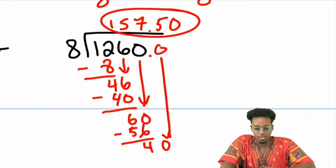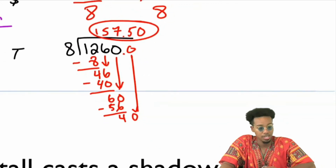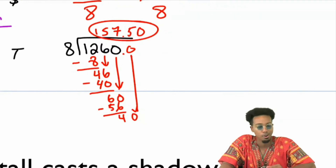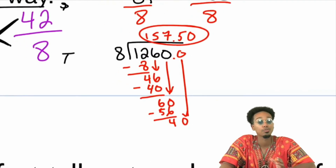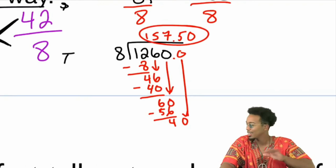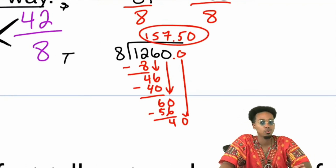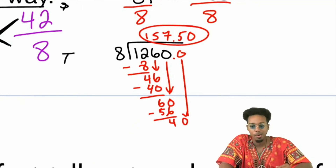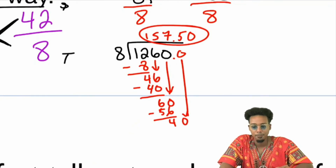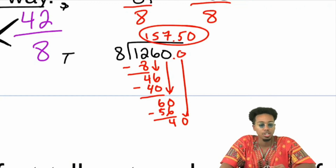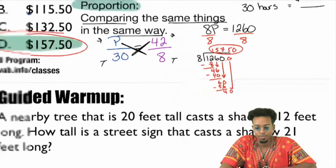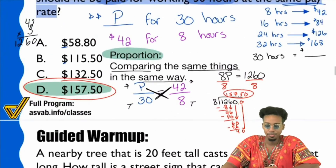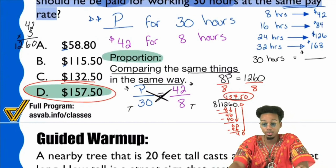As Dominic noted, you could do it faster by simplifying first. If you did the horizontal or vertical simplification from last week, that'll shave off at least 20 seconds of calculating. Either way, you should have gotten $157.50 — that's answer choice D, and we'd be all good.